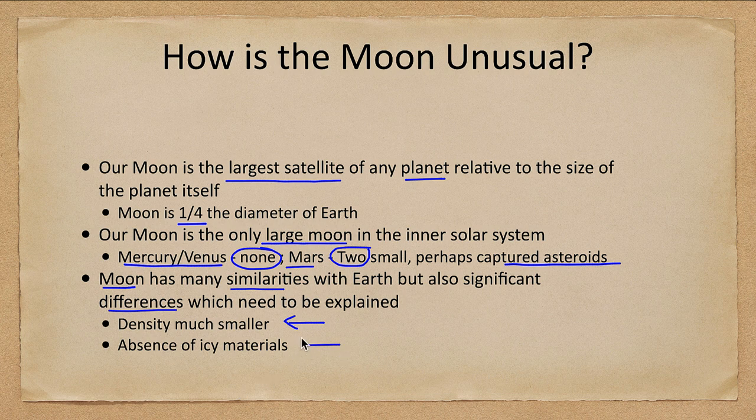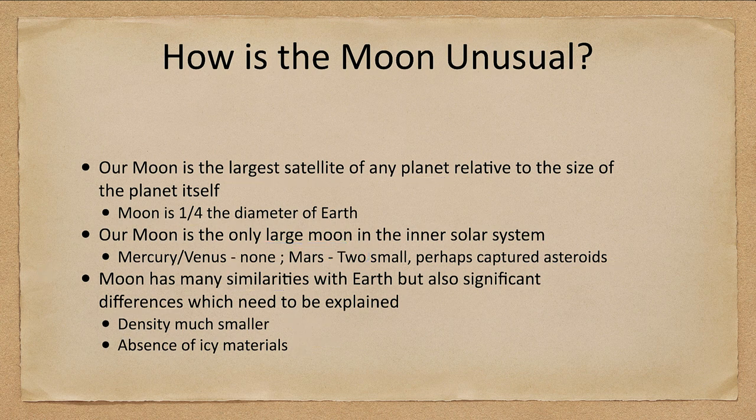Why is there a complete lack of icy material on the moon compared to Earth? Those are things that any model explaining how the moon formed has to be able to explain.